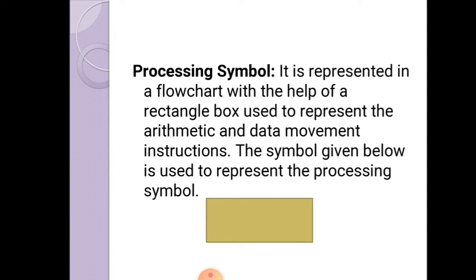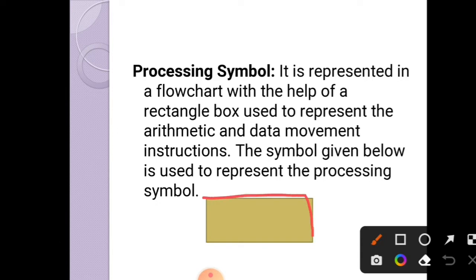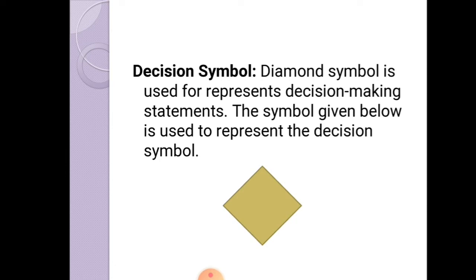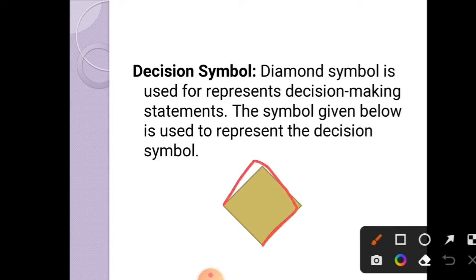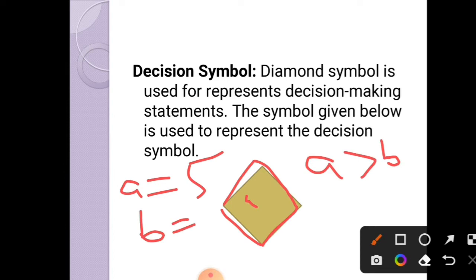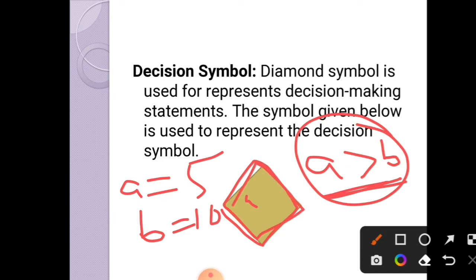The process symbol is represented using a rectangle box and is used to represent arithmetic operations as well as data movement instructions. The decision symbol uses a diamond shape — for example, if we want to check whether A is greater than B or not, where A equals 5 and B equals 10, we represent this condition using the diamond-shaped decision symbol.